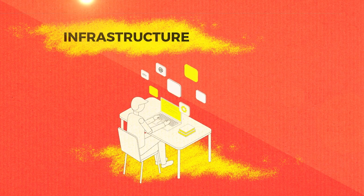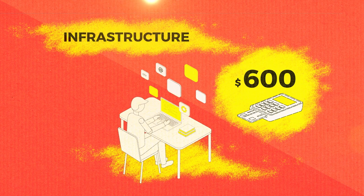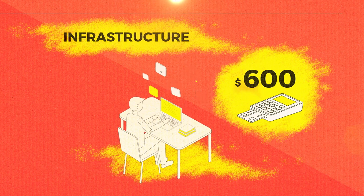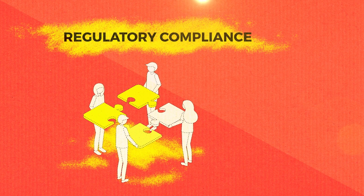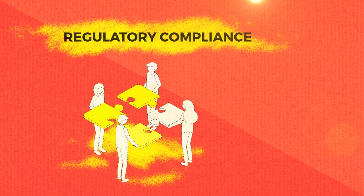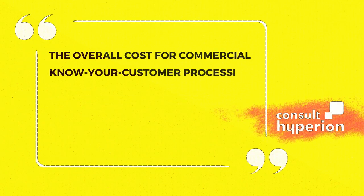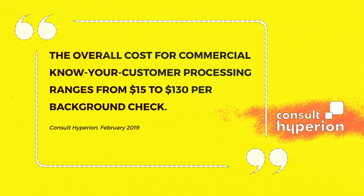Infrastructure: much of the cost effectiveness of cash and voucher assistance programming depends on whether or not a robust payments infrastructure already exists. A typical hand-held point-of-sale device costs approximately $600 and depends on internet connectivity. Regulatory compliance: by law, financial service providers are obliged to conduct Know Your Customer due diligence on each potential customer. Additional legal measures covering anti-terror, anti-money laundering and data protection have also been introduced recently. In crisis situations, at least some of this process is carried out by the aid agency partner, thus saving the service provider the cost of doing so. The overall cost for commercial KYC processing ranges from $15 to $130 per background check and takes an average of 48 days.